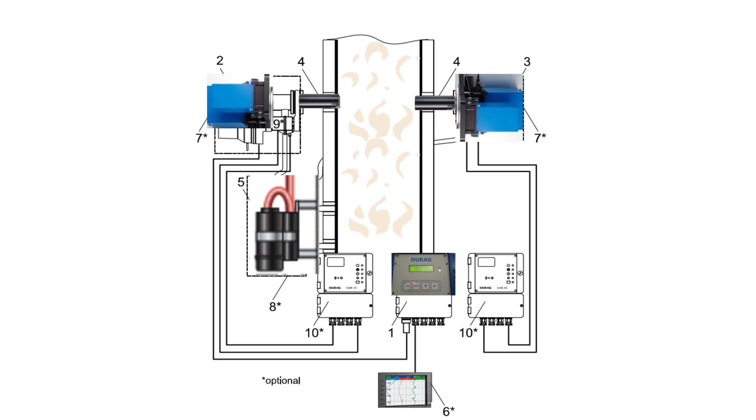Number six is recording device. Durag can supply a chart recorder, but normally the customer has a recorder or data logging system to record the data. Number seven is weather hoods for transceiver and reflector. This is a large fiberglass box with a hinged cover to protect stack opacity components from the weather and burns. Number eight is weather hood for purge air system, also available.